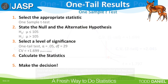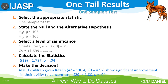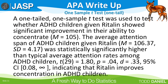Returning to our five steps of hypothesis testing, our t of 1.797 — which we round to 1.80 — exceeds the critical value of 1.699. Step 5: make the decision. ADHD children given Ritalin show significant improvement in their ability to concentrate: t(29) = 1.80, p = 0.04. The mean and standard deviation for our sample are also included. Here is how we would write up these results in APA style. If you are writing this up for a paper, the last line interpreting the meaning of your findings would go in your discussion section.